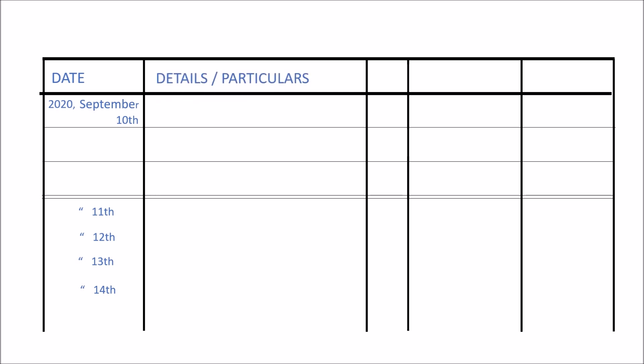Then we have the column for particulars. Here we write the details regarding the account titles, and the descriptions are recorded. The name of the account to be debited is entered first at the extreme left of the particulars column, next to the date. The name of the account to be credited is entered in the next line, leaving a few spaces away from the particulars column. In the next line, a short description about the transaction known as the narration is recorded. The narration may include particulars required to identify and understand the transaction, and should be adequate enough to explain it.